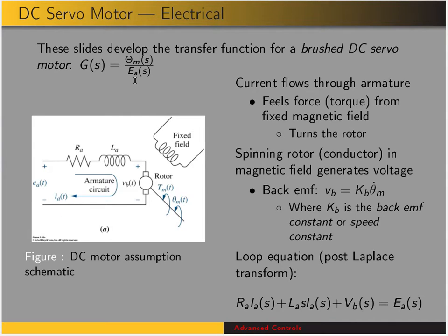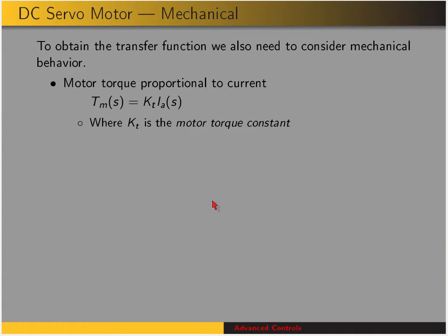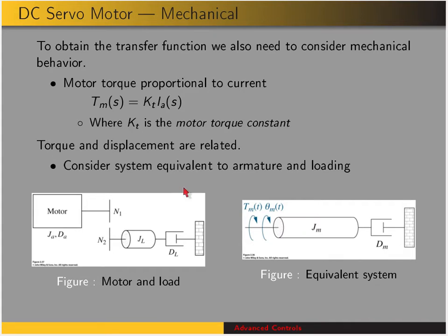We want to relate the displacement to the applied voltage, so we'll need to consider the mechanical system in order to obtain expressions for displacement. The motor torque is proportional to the current through the armature, and KT is referred to as the motor torque constant. This is different for every motor, just like the speed constant KB. All the motor parameters vary with motor design. Motors are typically in systems where we have the motor with armature moment of inertia and armature damping, connected through gearing to a load that has a moment of inertia and damping from the load.